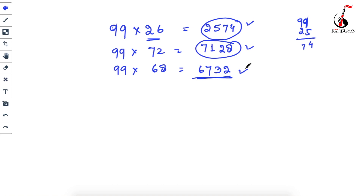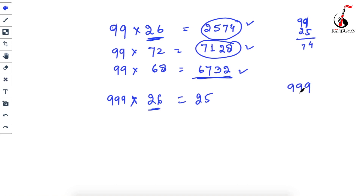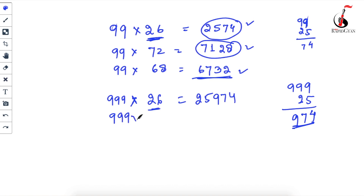Now for three-digit 9s: 999 × 26. One less than 26 is 25. Subtract 25 from 999: 9 − 0 = 9, 9 − 2 = 7, 9 − 5 = 4, giving 974. Answer: 25974. For 999 × 72: one less is 71, then 9 − 0 = 9, 9 − 7 = 2, 9 − 1 = 8. Answer: 71928. Check it!